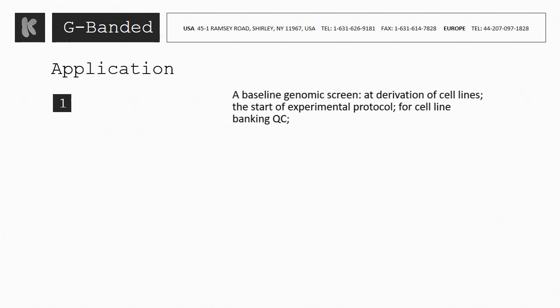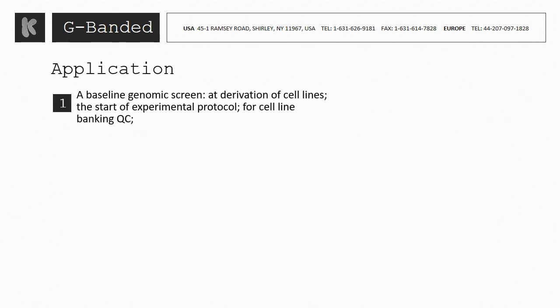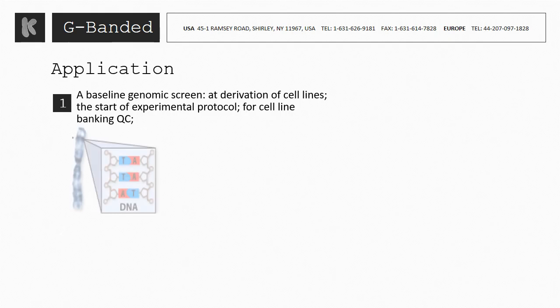The applications of G-banded karyotyping include the following: first, as a baseline genomic screen for the derivation of cell lines, at the start of an experimental protocol, and for cell line banking quality control.